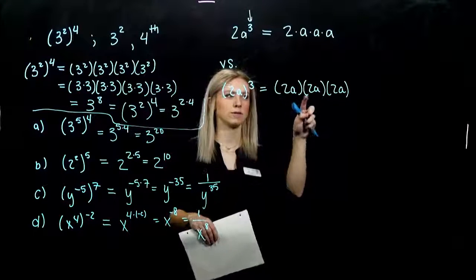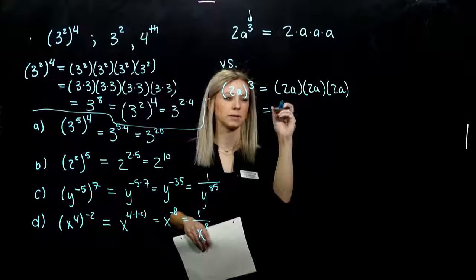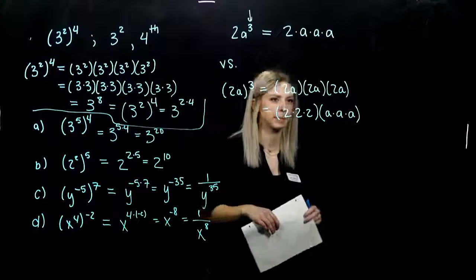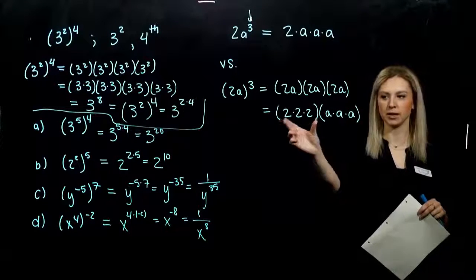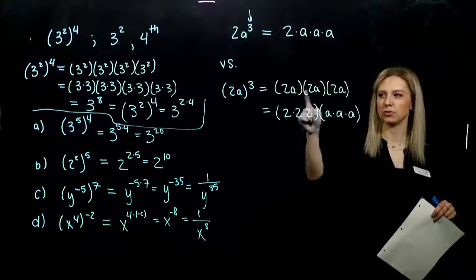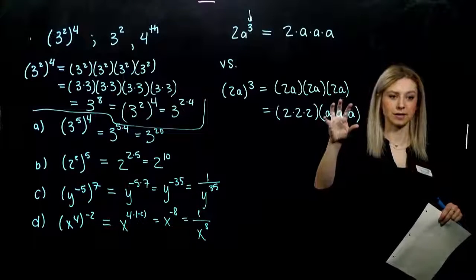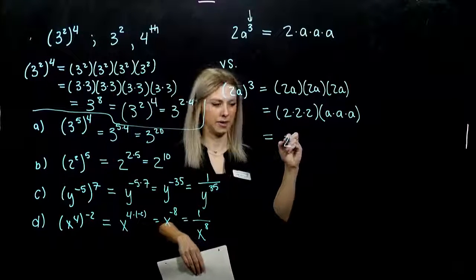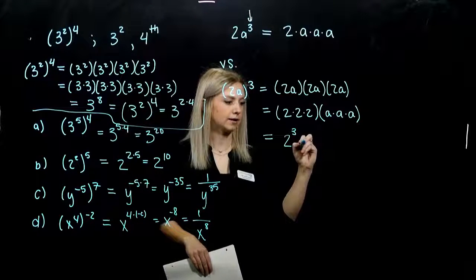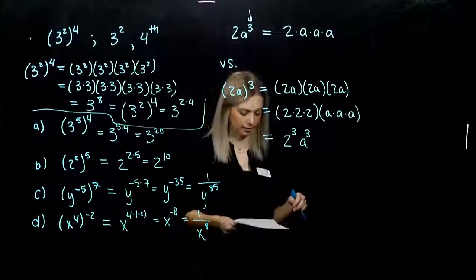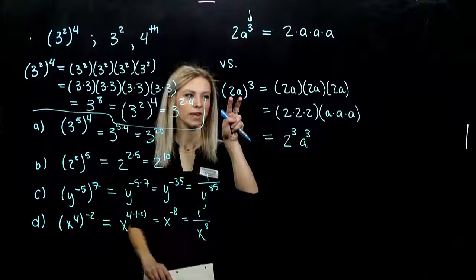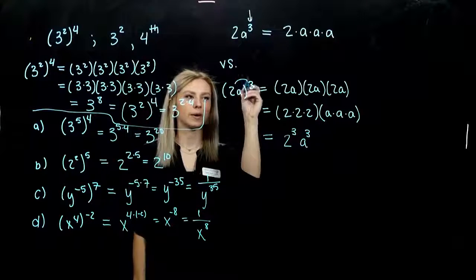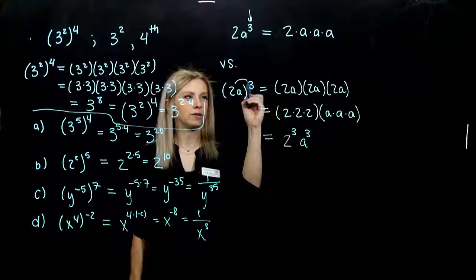Multiplication is associative and commutative, so I can reorder and regroup as I please. I can group the 2s together and the a's together — three 2s and three a's. We can write these concisely using exponent notation: 2 raised to the third power times a to the third. So when I have a product for my base — more than one thing on the inside — and a power outside, I just distribute the power. I give the power 3 to my base 2, and also give the power 3 to my base a.